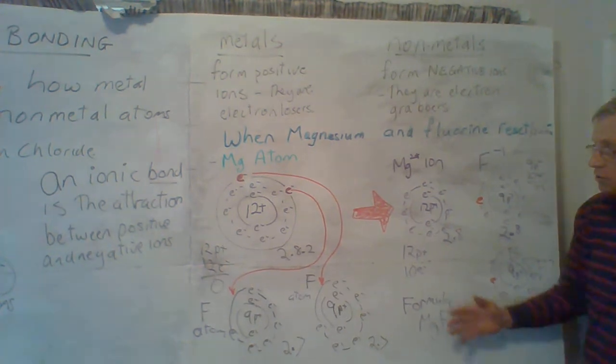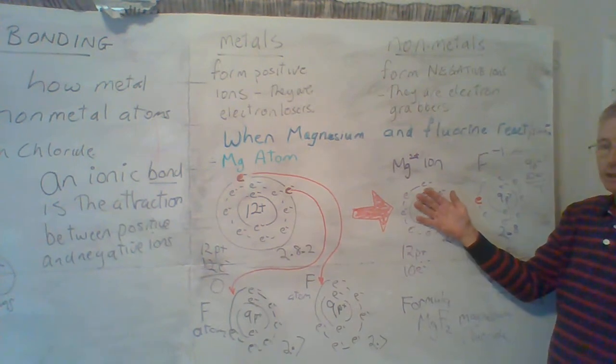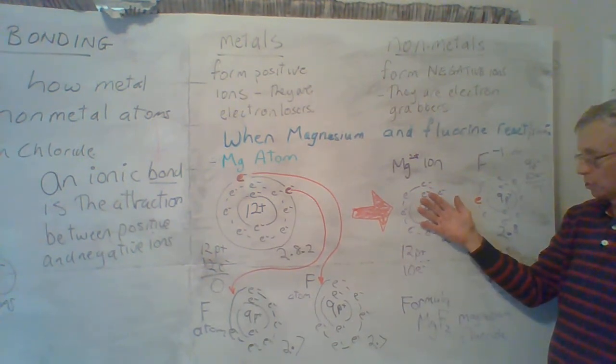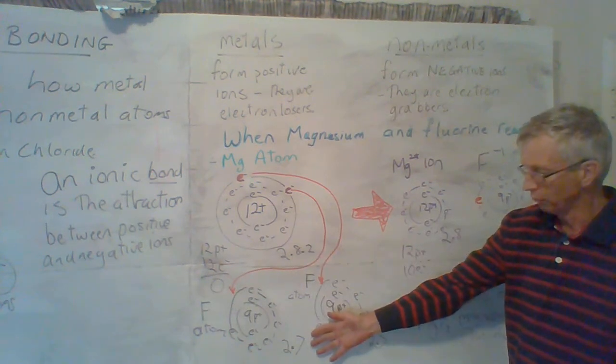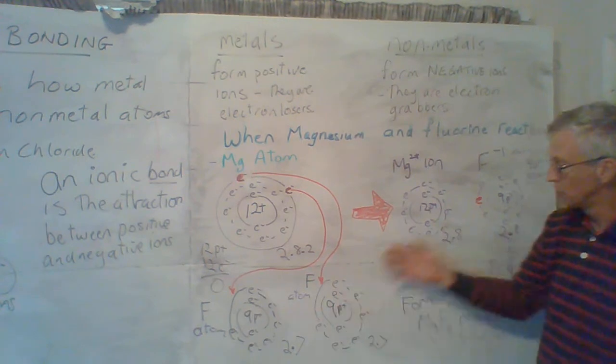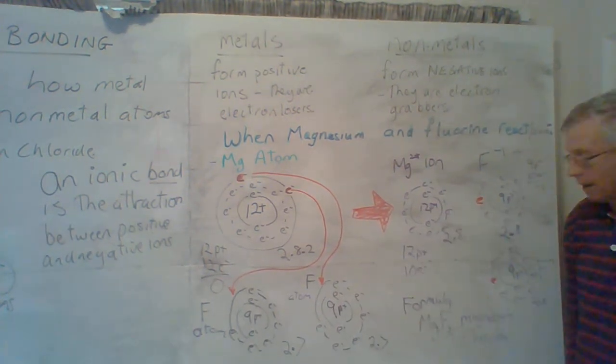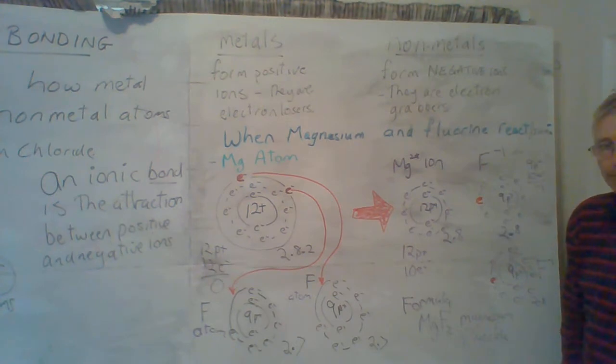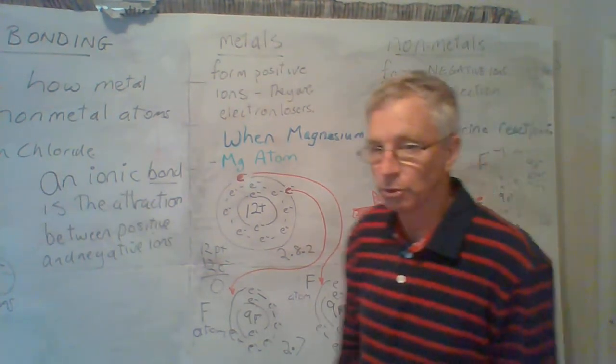So, it goes from being a nice shiny silver piece of magnesium and a yellow poisonous explosive gas for the fluorine gas into a plain old white solid powder made of little grains, which is magnesium fluoride. And in fact, it's in some medicines, you use magnesium fluoride. So, it's quite harmless compared to the fluorine.